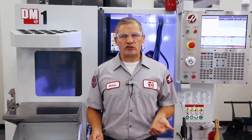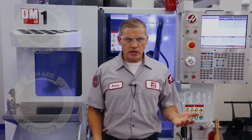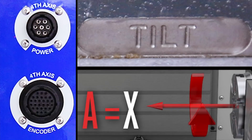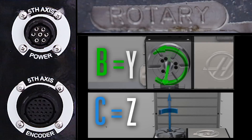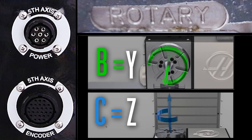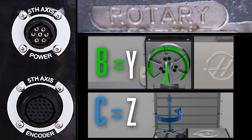First, let's talk about what the axes are called. Depending on where you look, you might see them referred to as fourth axis and fifth axis, or tilt and rotary, or for programming purposes they may be referred to by their axis letter designation, like A, B, or C. These are different names that all mean the same things. The fourth axis is the same as tilt and is also the same as A axis. The fifth axis is the same as rotary axis and will also be either the B or C axis, depending on how the rotary is mounted. Check out these graphics so you can better understand.